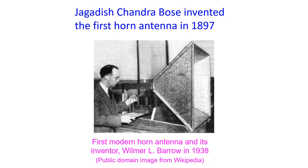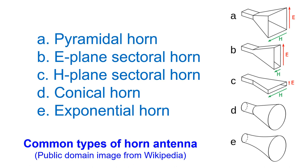Gain of horn antennas can be as high as 25 dBi. The usual setup is a coaxial cable introducing the radio waves into a waveguide which takes it to the horn antenna. The central conductor of the coaxial cable would project into the waveguide to form a quarter wave monopole antenna.